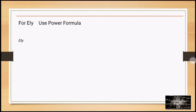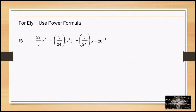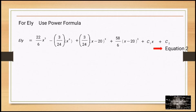For EI·Y, using the power formula again: EI·Y equals (22/6)X³ minus (3/24)X⁴ plus (3/24)(X−20)⁴ plus (58/6)(X−20)³ plus C₁·X plus C₂. This is Equation 2.